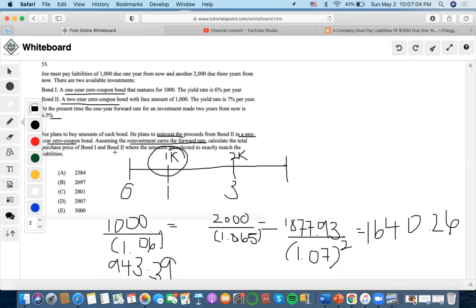Now, calculate the total purchase price of bond one and bond two. So we're going to add both of these and we're going to get $2,583.65, which is closest to answer A.